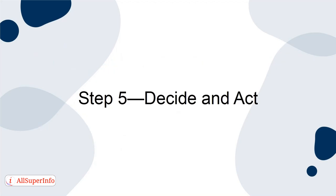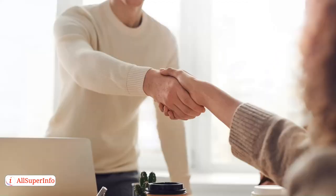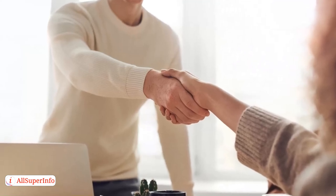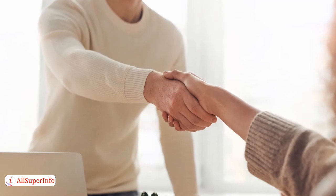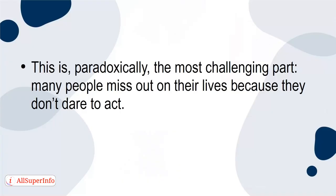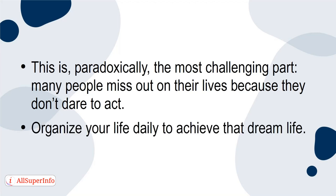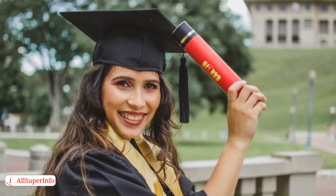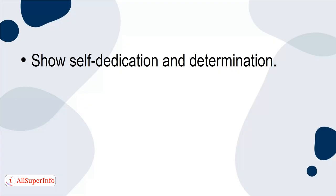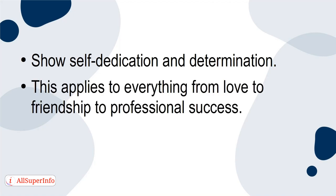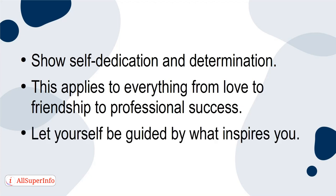Step 5: Decide and act. Once you know what you want and apply the three values, all you have to do is make decisions and take action. This is, paradoxically, the most challenging part. Many people miss out on their lives because they don't dare to act. Organize your life daily to achieve that dream life. If that means getting a degree to get the job of your dreams, go for it. Show yourself dedication and determination — this applies to everything from love to friendship to professional success. Let yourself be guided by what inspires you.